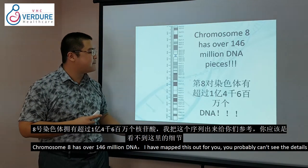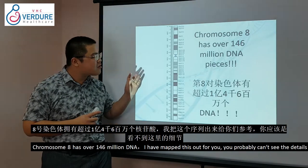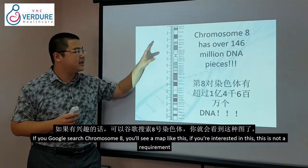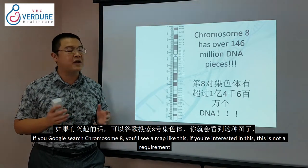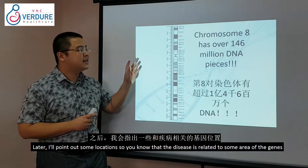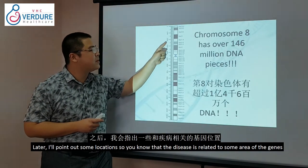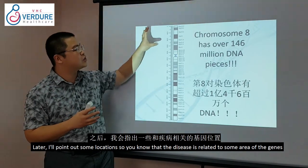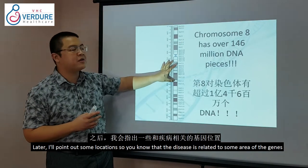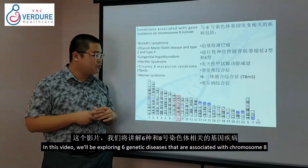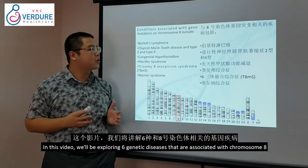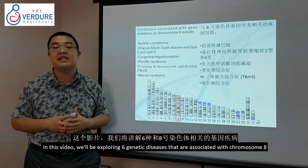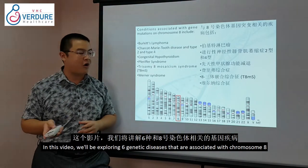I've drawn up a map of chromosome 8. You can search for it on Google if you're interested — in later talks I'll be pointing out locations related to specific diseases. In this talk, we will be exploring 6 genetic diseases associated with chromosome 8.